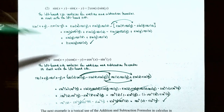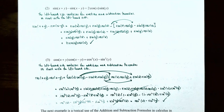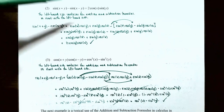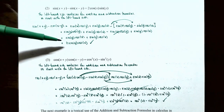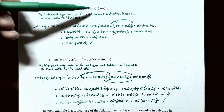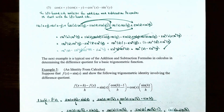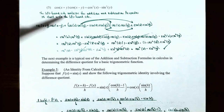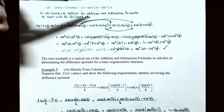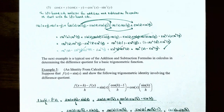That's exactly the right-hand side of the trigonometric identity, so this proves it. Sine of x plus y subtract sine of x subtract y equals two times sine of y times cosine of x. Number three: this time we have the sum and difference formulas for the cosine function. We need to show that cosine of x plus y times cosine of x subtract y equals cosine squared of x subtract sine squared of y.